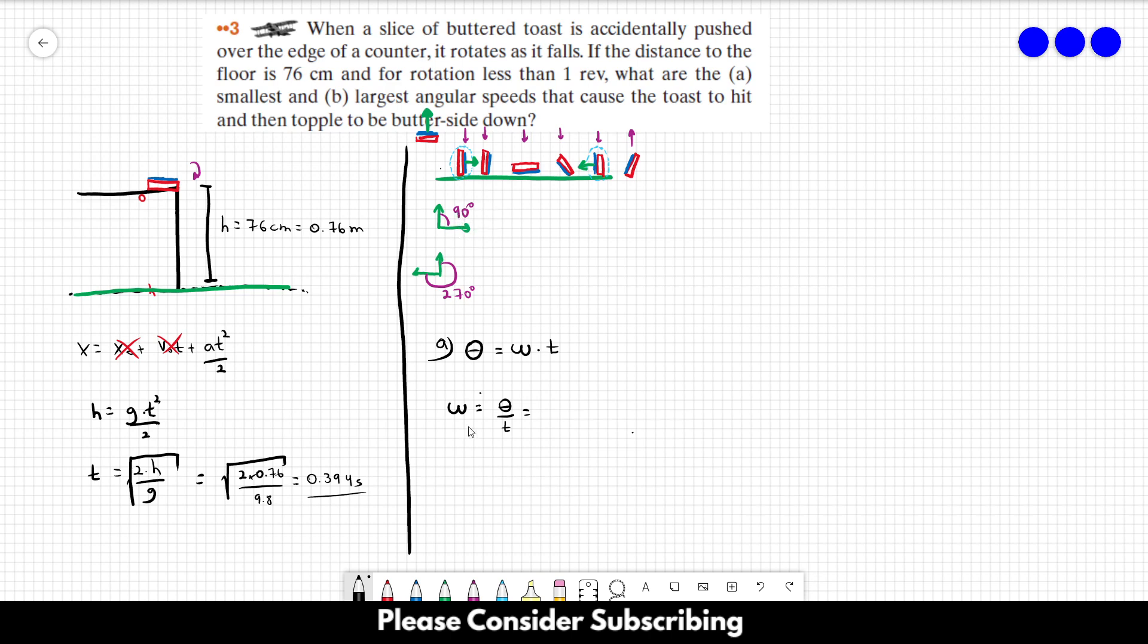In our case, for letter a, this is 90 degrees, and 90 degrees is equal to π over 2. So π over 2 divided by 0.394, and this is equal to roughly 4 radians per second. And this is already the answer.